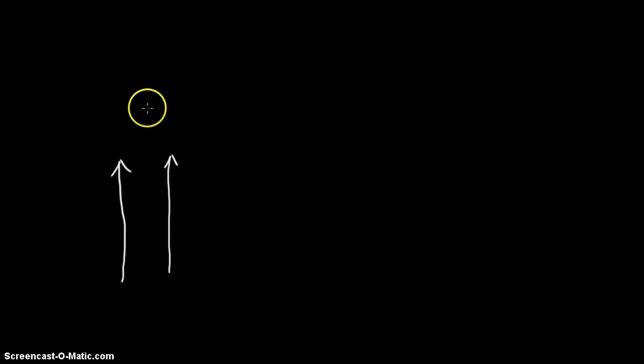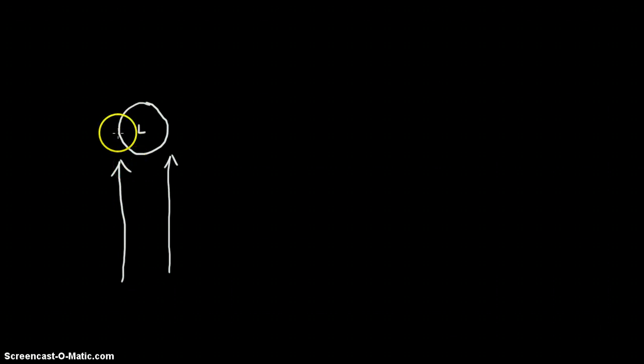So when we have air that's warm, that air will, of course, rise. And we get this thing called a low pressure system. The air is moving away from the Earth, so the pressure is less on the Earth. The air condenses, creates clouds, and can also create precipitation.